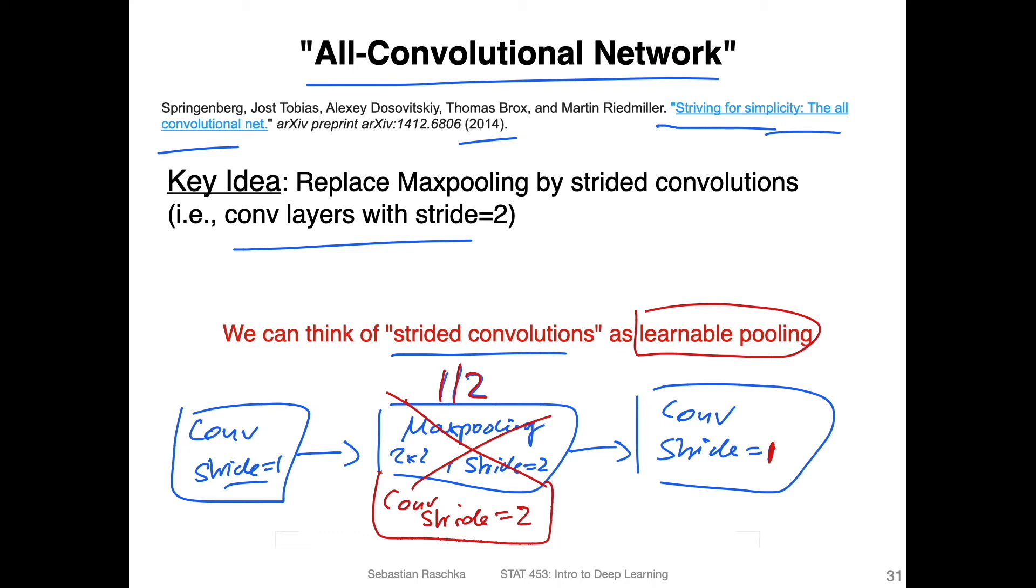At least that's what they argue here in that paper. So it will be, of course, a little bit more expensive because you have more parameters. But in that way, you can also simplify the network in terms of having it look simpler by just saying, okay, we only use convolutions, we don't use anything else if that's desirable. Of course, you still need the activation function, but you don't need pooling layers, for example.